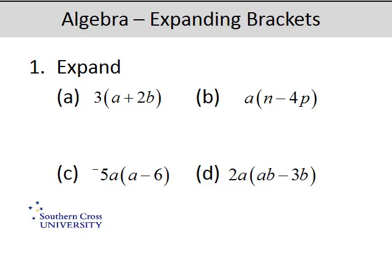So in this first one, this means 3 multiplied by everything that's inside the brackets. So it's got to be 3 lots of a plus 3 lots of 2b. So 3 lots of a is 3a plus 3 lots of 2b is 6b.